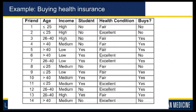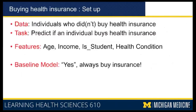Each instance has four different characteristics: age, income, whether they are a student or not, and what is their health condition. You also know their label — their decision that they made for themselves — and that is in the 'buys' column. This is a binary classification task; the buys column is a binary column.